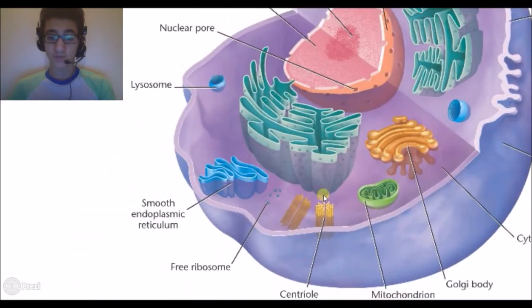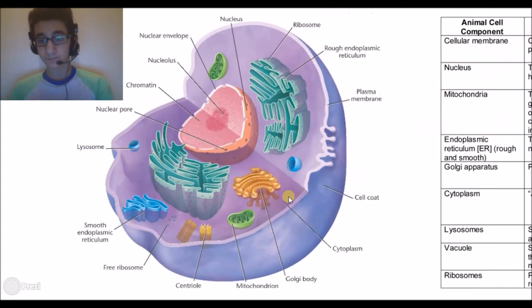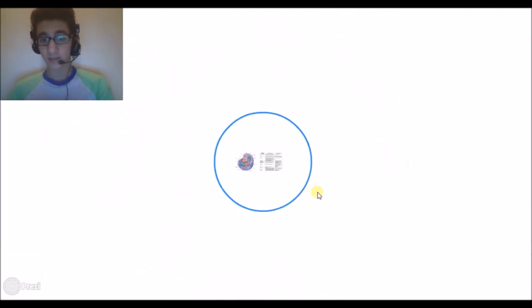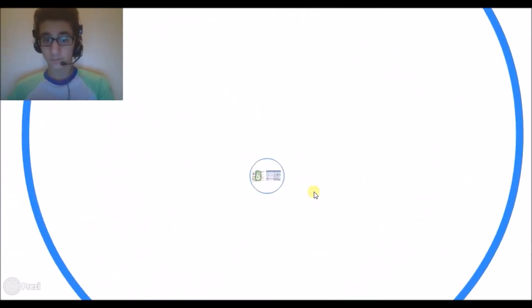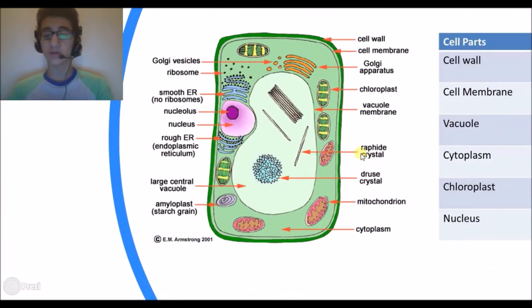Now we'll go to the plant cell. This is the plant cell. It is not a circle, not a completely circle, it doesn't really look like the animal cell.